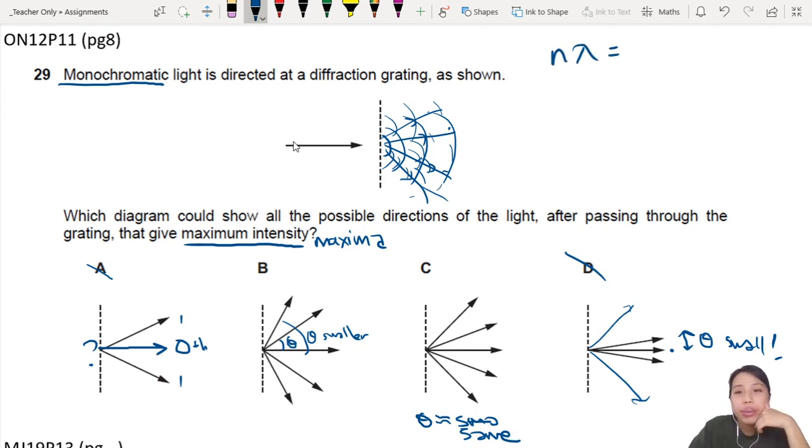N lambda equals D sine theta. We're looking at the same light source, right? So this N is a constant. D is a constant because we're not changing grating. Same grating, same spacing. Lambda, sorry, not N is constant. Lambda is constant. Yes, same light. So what's changing? Your N. You're going from N equals 1, N equals 2, N equals 0. You're increasing your N.